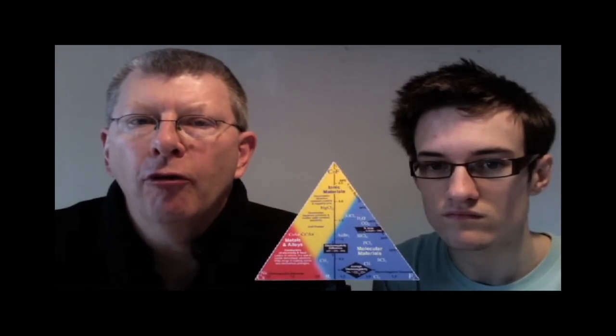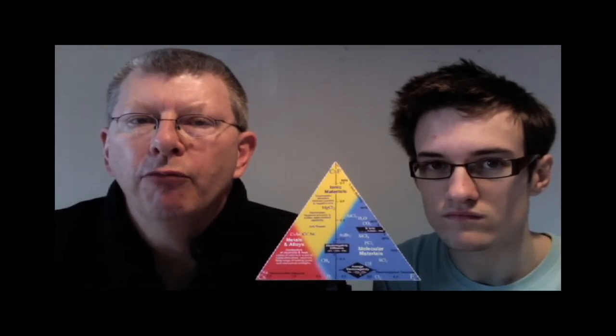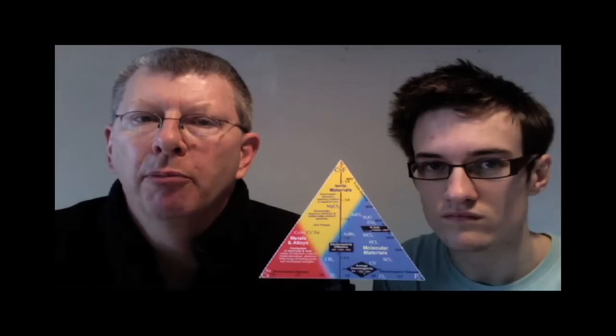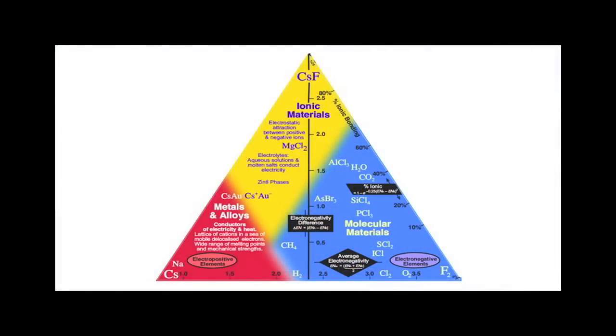Okay, so here we have the new tetrahedron of structure, bonding, and material type. On this side, we can clearly see fluorine F2, the molecular material, in blue. Caesium, the metal, in red, and the ionic material, at the top of this face of the tetrahedron, the triangle, in yellow.